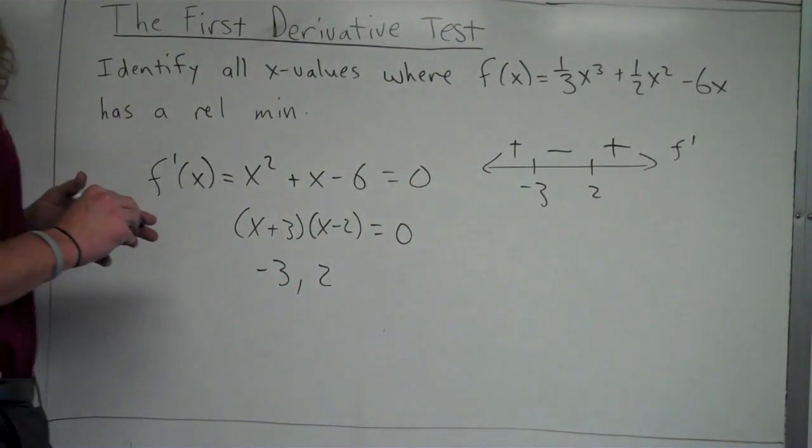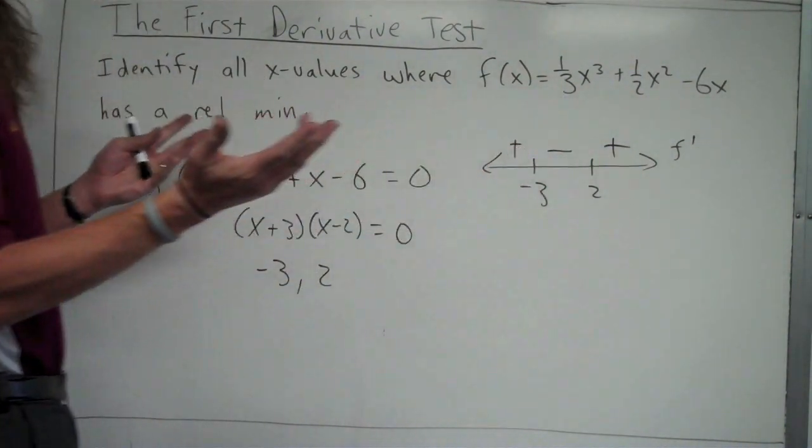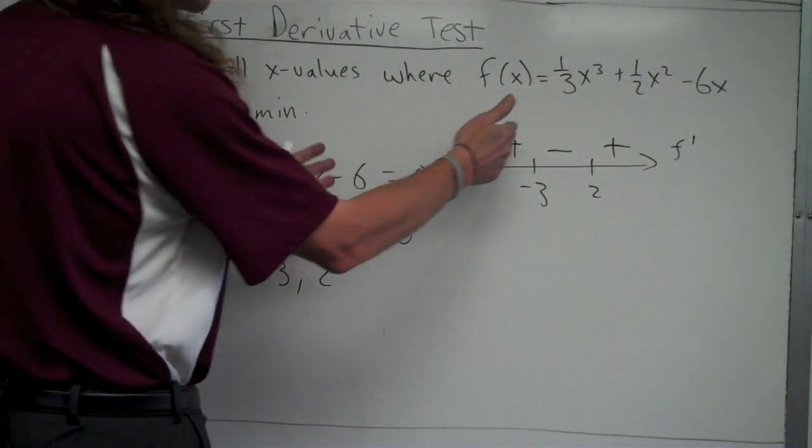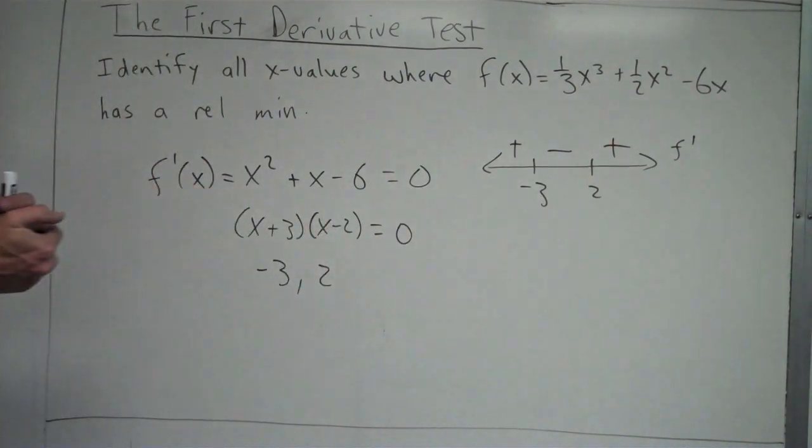You'll notice on the last couple examples, it went positive, negative, positive, I think, in both of them. And you'll notice, you see how the signs alternated. It doesn't always happen like that. There are cases where the signs do not change, okay? So, you do need to always check each interval just to make sure.